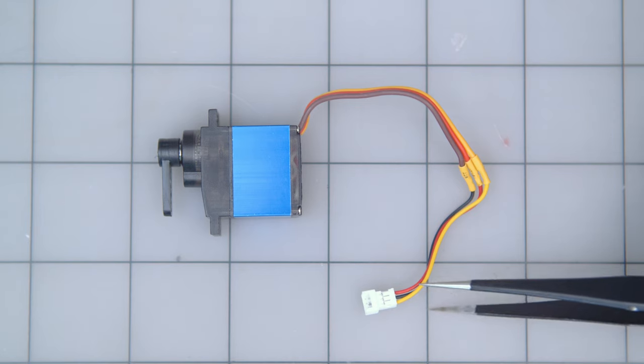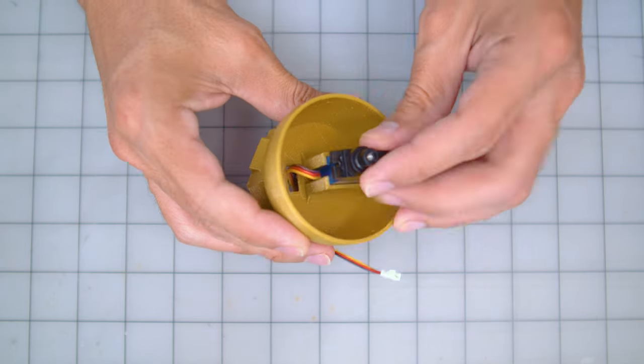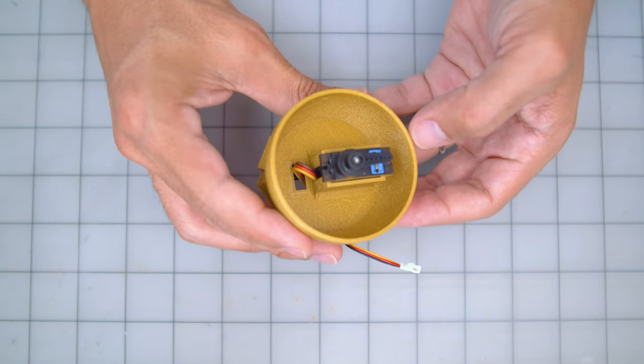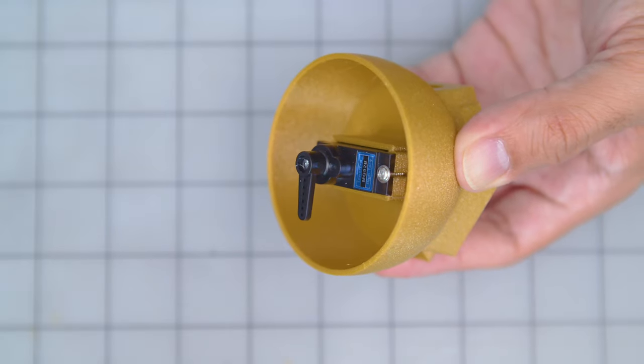This metal geared servo is wired to a 3-pin Molex cable. The servo is installed with the wiring fitted through the cutout. The cable fits through a hole and is pulled through the other side. Screws are used to secure the servo to the enclosure.